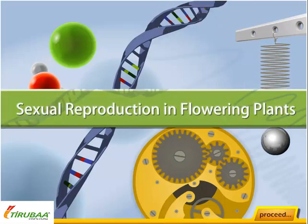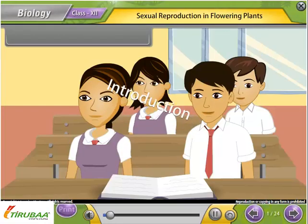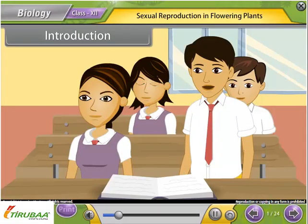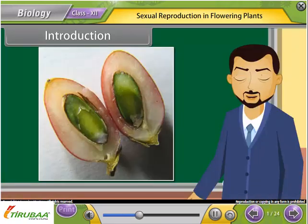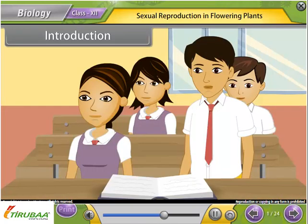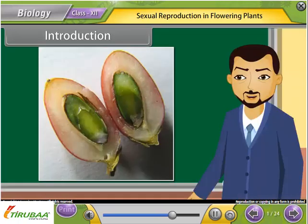Sexual Reproduction in Flowering Plants — Introduction. Why do we find seeds inside a fruit? Seeds develop as a result of sexual reproduction in plants. Sexual reproduction is the formation of a new individual following the union of two gametes.